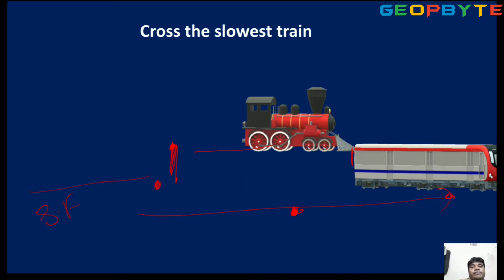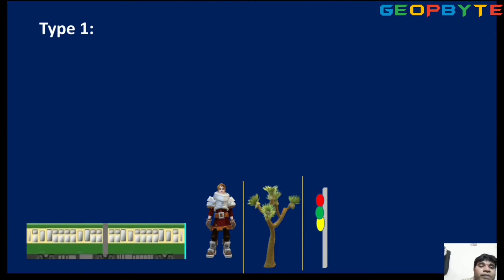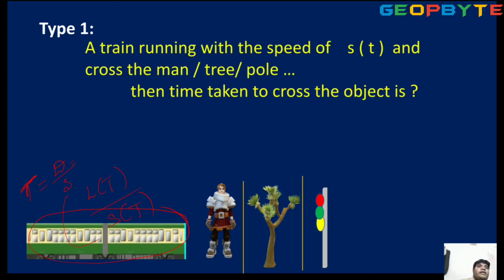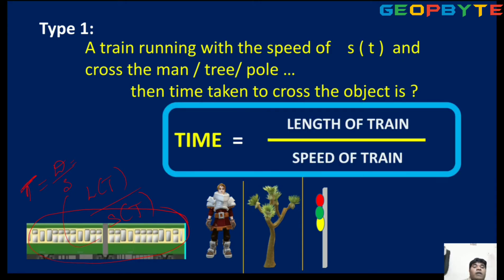These four types we have. Now what are the formulas? First type: a train running with speed S_t crosses a man, tree, or electrical pole. Time is equal to distance divided by speed. The distance here is the length of the train, and speed is the speed of the train. So: time = length of train / speed of train.